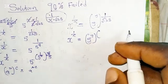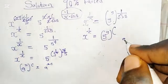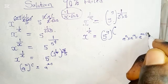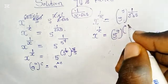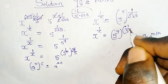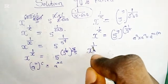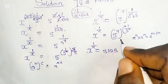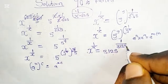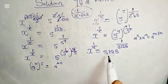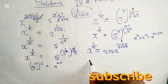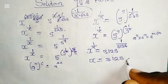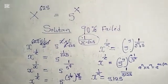Don't forget the law of indices which says a raised to the power n times a raised to the power m is equal to a raised to the power m plus n. Recalling that property, we get 1 over 5 raised to the power of 5, which gives us 1 over 3125. Comparing these two together, x equals 3125. Please don't forget to like, share, and subscribe. Thank you.